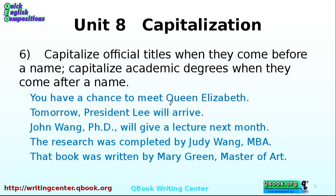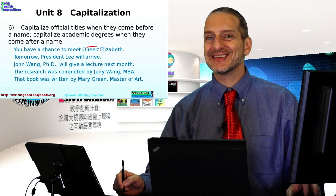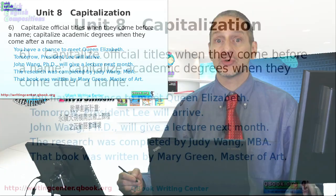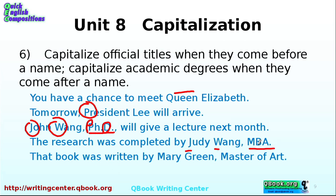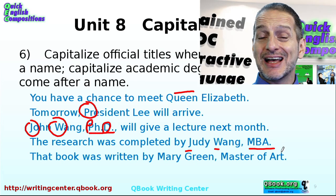Titles are something people often get wrong. For example: 'You have a chance to meet Queen Elizabeth.' Her name is Elizabeth — Queen is her title, so you capitalize it. Similarly, 'President Lee' — President is his title, so capitalize it. 'John Wong, PhD' — first name and last name are capitalized, and PhD stands for Doctor of Philosophy, so P and D must be capitalized. 'The research was completed by Judy Wang, MBA' — MBA stands for Master of Business Administration, so that title is capitalized too.